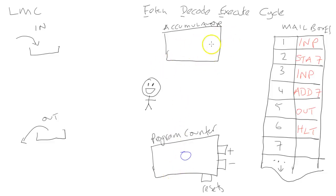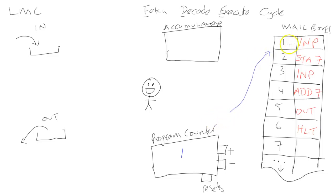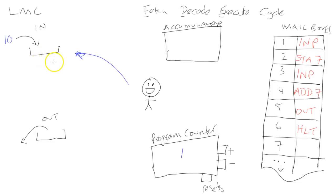The program counter currently reads one and there's nothing in the accumulator, in-tray, or out-tray. The little man walks over to the program counter, sees it's pointing to position one, walks over to that mailbox, and sees the first instruction is 'input'. He walks over to the in-tray, fetches the number 10, and puts it into the accumulator. He then increments the program counter to 2.